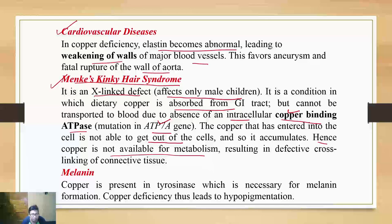Last but not the least: melanin deficiency due to a problem in tyrosinase activity. Tyrosinase is a copper-containing enzyme, and if copper is deficient, tyrosinase will not function properly, and thus copper deficiency will produce hypopigmentation.